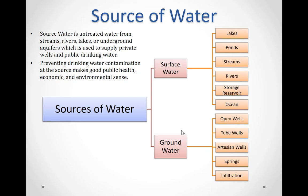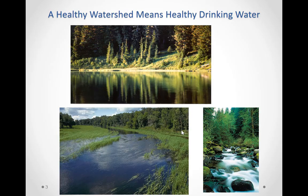As seen in this diagram, source water can be divided into surface water and groundwater. Surface water is water located in lakes, ponds, streams, rivers, storage reservoirs, and the ocean. Groundwater, on the other hand, is water from open wells, boils, artesian wells, springs, and water from infiltration.